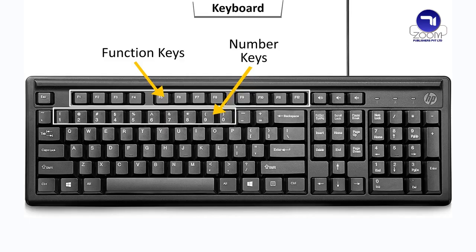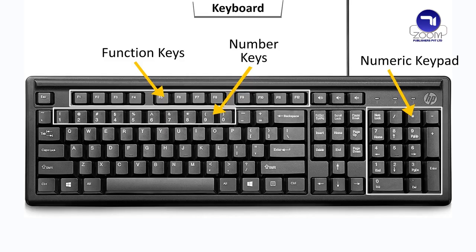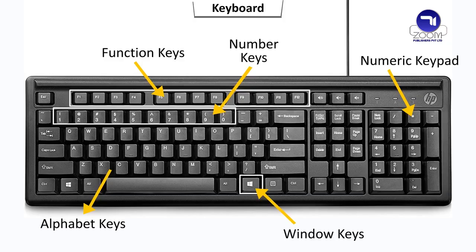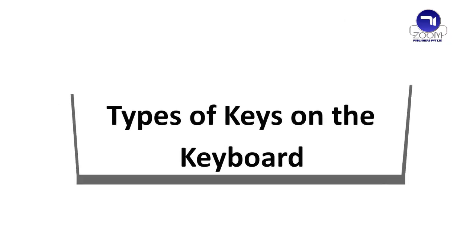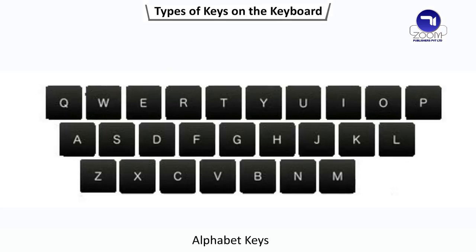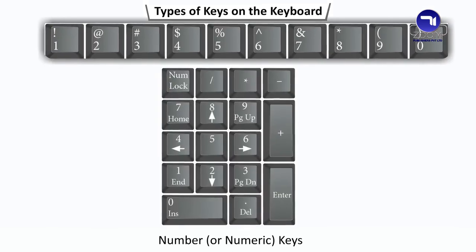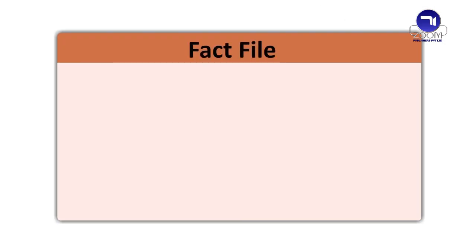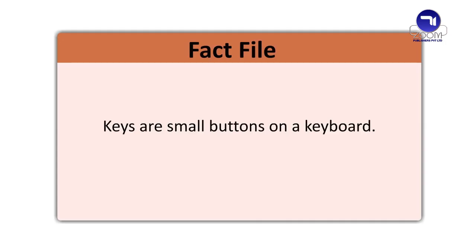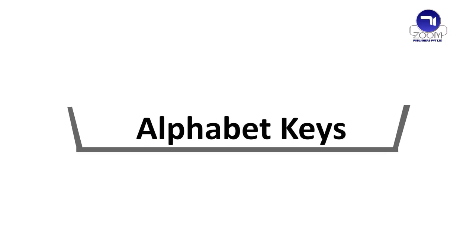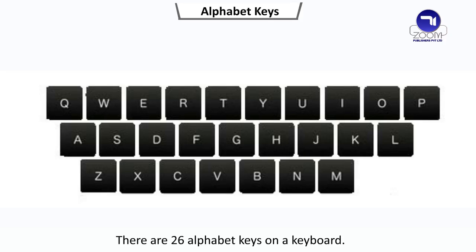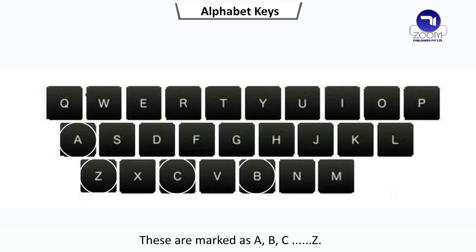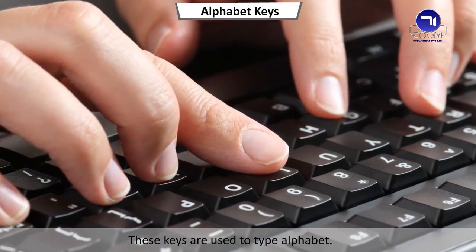Types of keys on the keyboard include Function Keys, Number Keys, Numeric Keypad, Alphabet Keys, and Window Key. There are 26 alphabet keys on a keyboard. These keys are marked as A, B, C through Z. These keys are used to type alphabets.